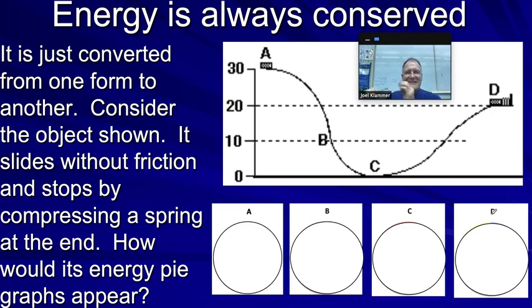So at point A, it's stationary. What kind of energy does it have at point A? And I'm hoping you'd say, oh, okay, wait. The only type of energy it has in this case is gravitational potential energy. So our entire pie graph is going to be U sub G, potential energy due to gravity.